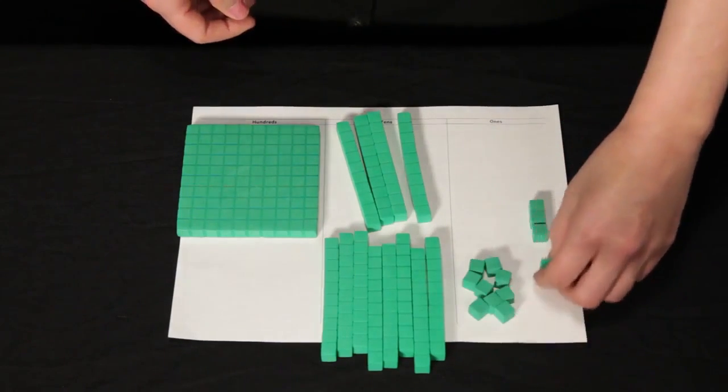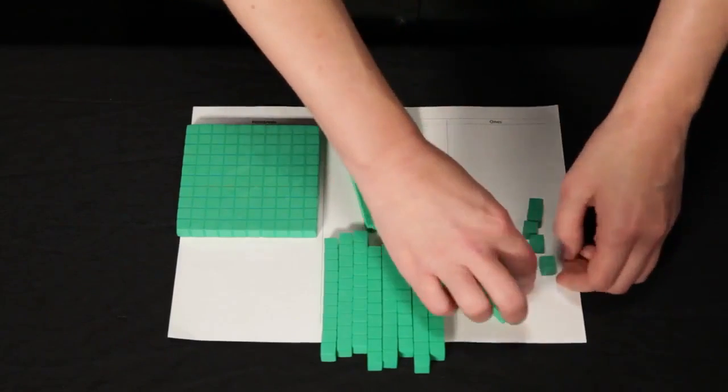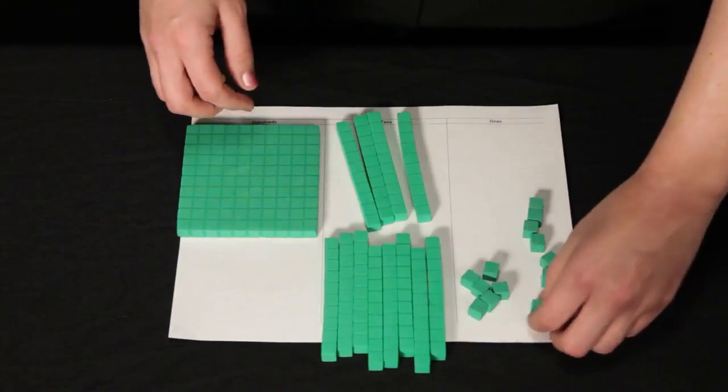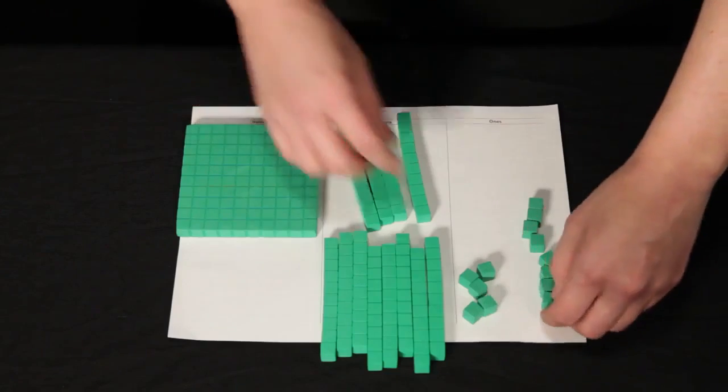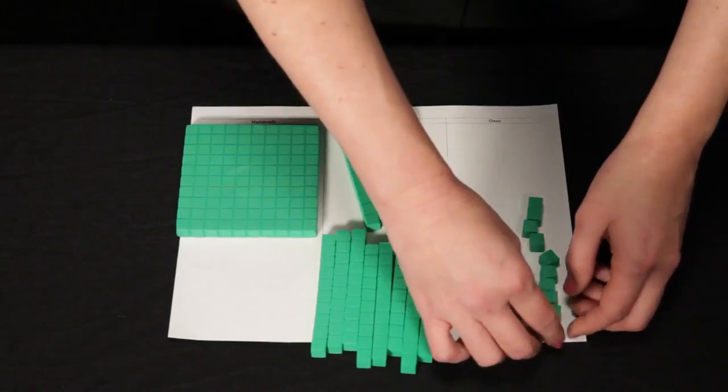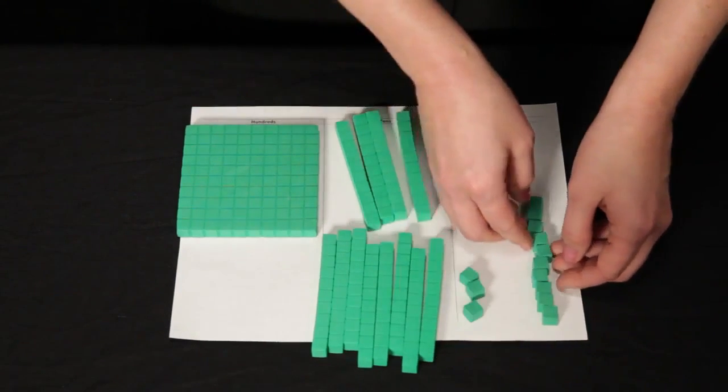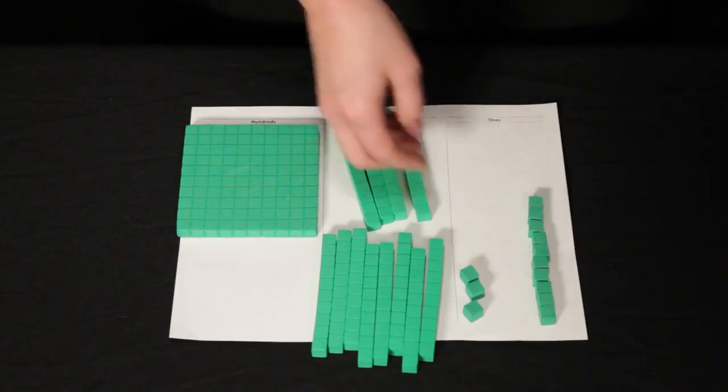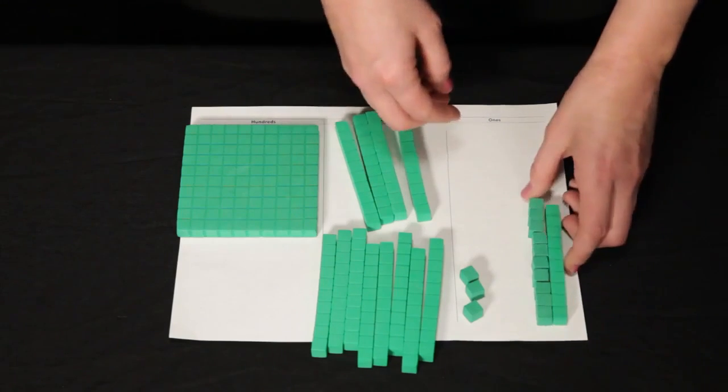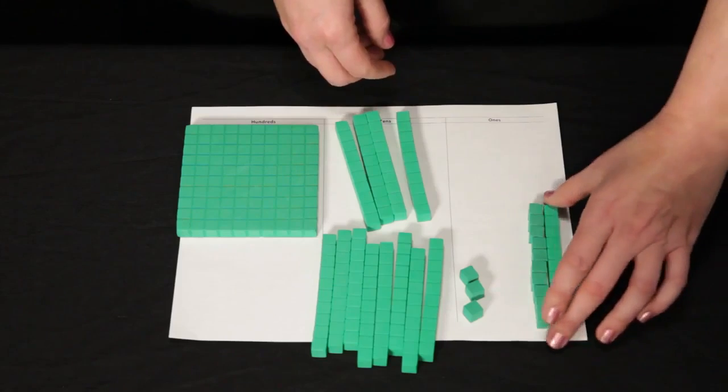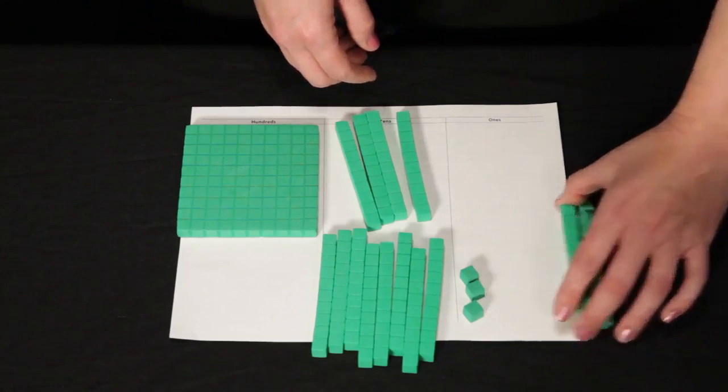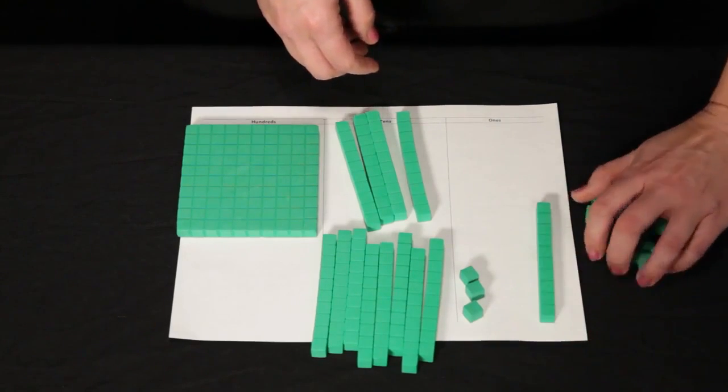1, 2, 3, 4, 5, 6, 7, 8, 9, and 10. I do have 10 ones and I know that 10 ones is the same as 1 ten. So I can exchange or regroup my 10 ones for 1 ten.